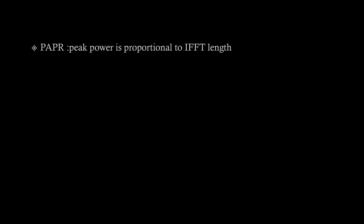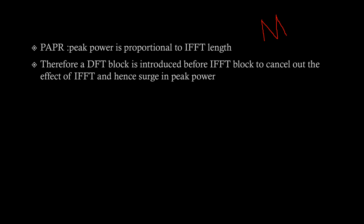The peak power in OFDM is proportional to the IFFT length. We know there is an IFFT block in the OFDM chain. If the IFFT length is M, then peak power is proportional to M. To reduce this value of M, we can introduce a DFT block — which is the inverse of IFFT — that can cancel out the effect of IFFT and hence the surge in peak power.